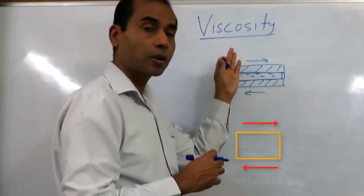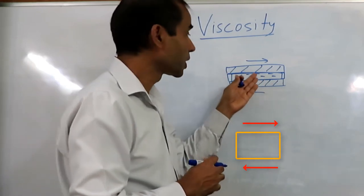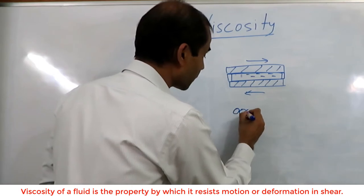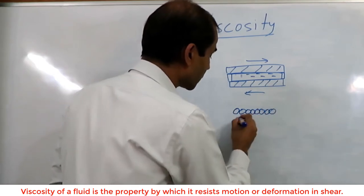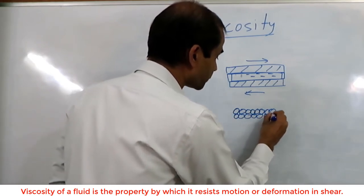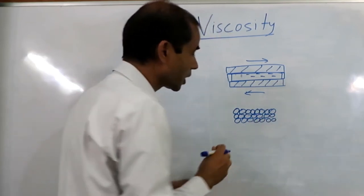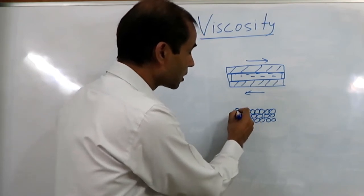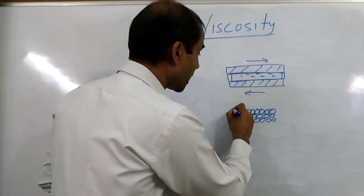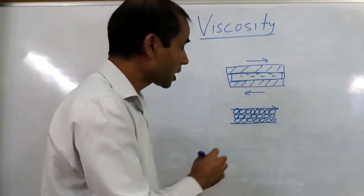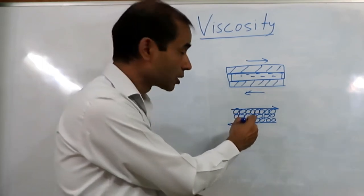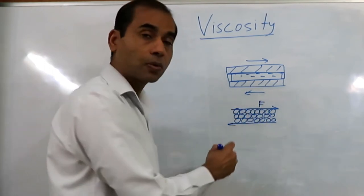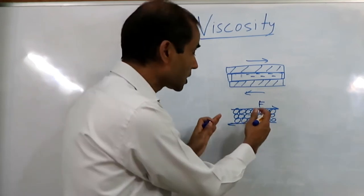Viscosity is the property of the fluid by which it resists motion — it resists this deformation. In this kind of shearing action, we can imagine that the fluid is made up of atoms and molecules arranged in layers. In a very idealized situation, we assume these atoms and molecules are arranged in layers, and we are shearing these layers against each other. There will be some resistance to this motion; the liquid wants to come back to its original position and doesn't want to move.